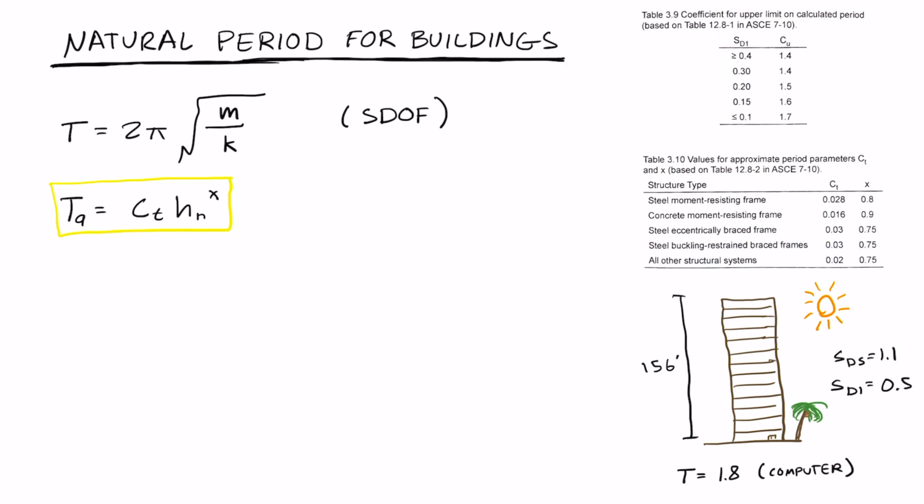Let's find the approximate or natural period for buildings. You may remember this equation here. This is the equation for natural period, but this only works for a single degree of freedom system. For this example, we're going to be looking at a 12-story building that's 156 feet tall. We are not able to use this equation because this is definitely not a single degree of freedom system because there are so many floors.